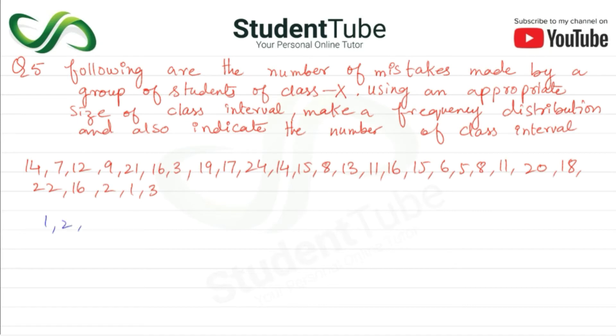In ascending order: 1, 2, 3, 3, 5, 6, 7, 8, 8, 11, 11, 12, 13, 14, 14, 15, 15, 16, 16, 16, 16, 17, 18, 19, 20, 22, and 24. Let's see, the smallest is 1 and the biggest is 24.